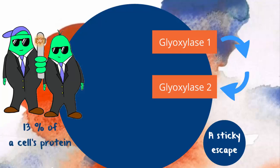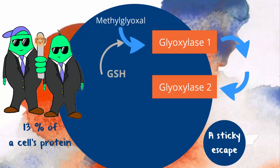How well yours works depends on genetics and circumstances. The glyoxalase clean-up system is a two-step process. GLO1 can grab onto the methylglyoxal when it reacts with glutathione, the cell's primary antioxidant. GLO1 is able to bind the hemithioacetal, creating S-D-lactyl glutathione.